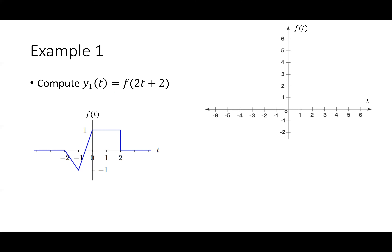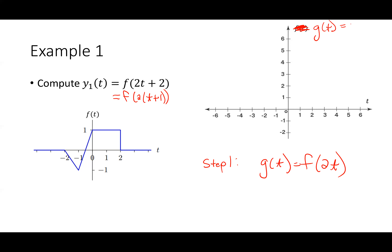I'm going to do this in two steps. The first step is scaling. So step one: compute G of T equal to F of 2T. I want to take F of T and first apply the scaling, then take that result and shift it in step two.